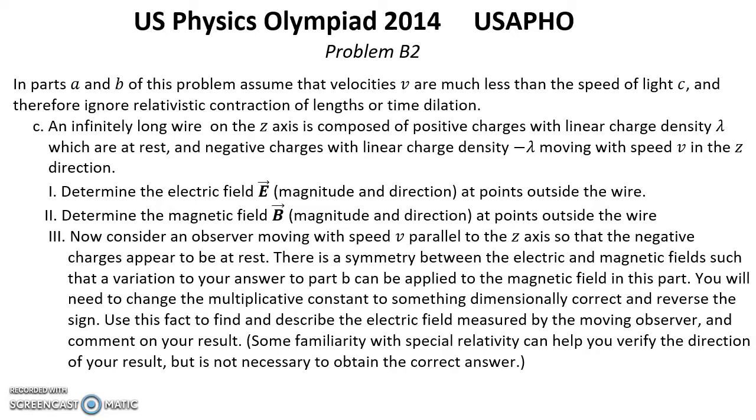Question 3: Now consider an observer moving with speed V parallel to the Z axis so that the negative charges appear to be at rest. There is a symmetry between the electric and magnetic fields such that the variation to your answer to part B can be applied to the magnetic field in this part. You will need to change the multiplicative constant to something dimensionally correct and reverse the sign. Use this fact to find and describe the electric field measured by the moving observer and comment on your result. Some familiarity with special relativity can help you verify the direction of your result.